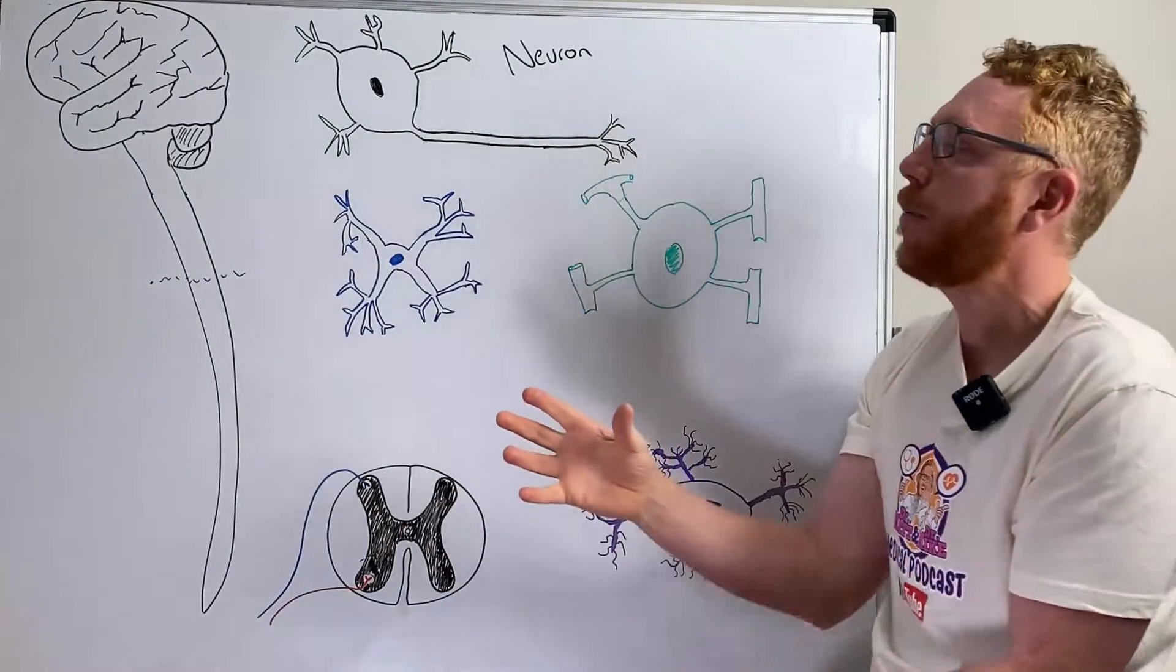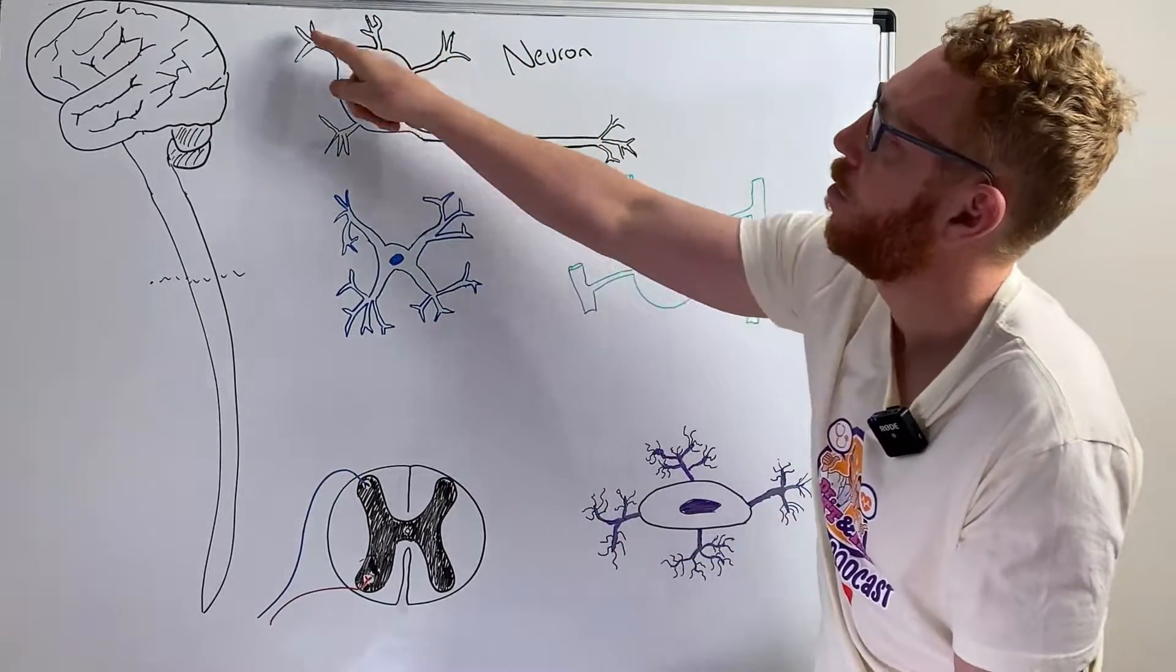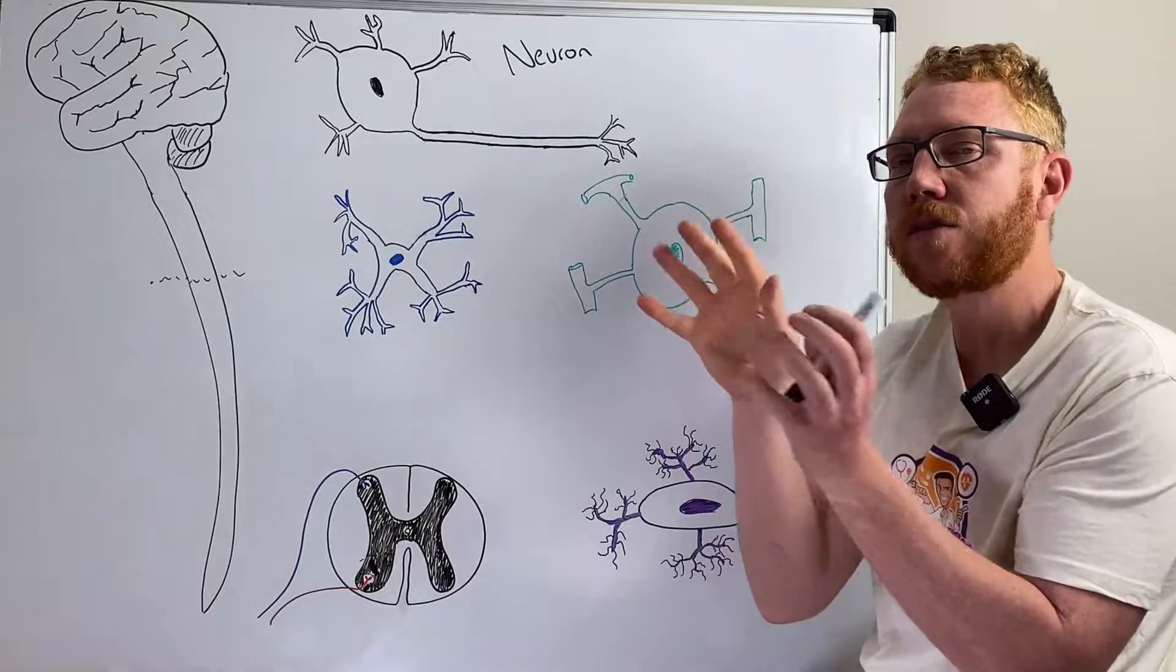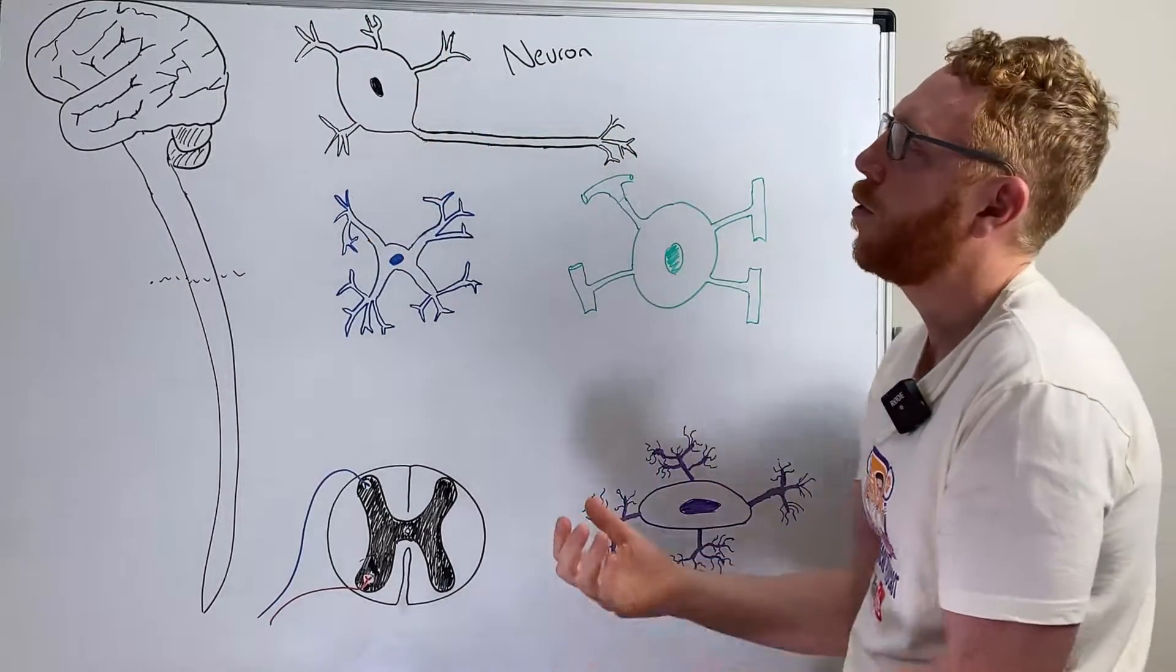When we look at the anatomy of a neuron, what we can see here is the body, the cell body. Sticking out from the cell body are what we call dendrites or branches. These are areas that receive information from other neurons or other receptors.